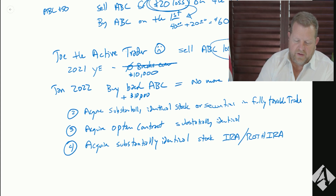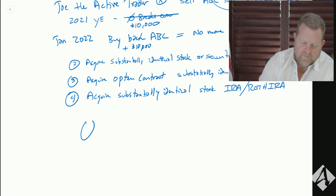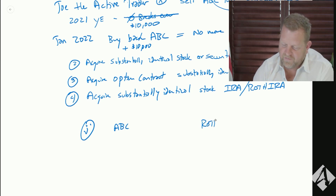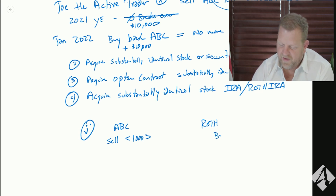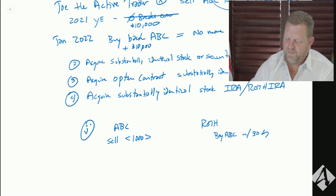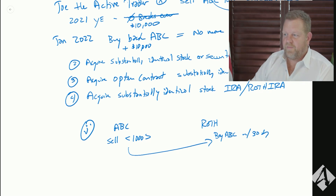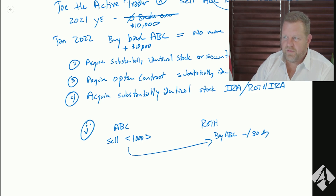In other words, if I have ABC in my regular account and a Roth IRA, and I sell ABC and lose a thousand bucks, then buy ABC in the Roth within 30 days, I lose that loss. I'm not going to be able to take it. So that's always the issue.